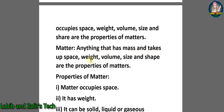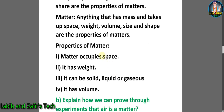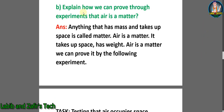Matter is anything that has mass and takes up space. The properties of matter are: number one, matter occupies space; number two, it has weight; number three, it can be solid, liquid, or gaseous; number four, it has volume. Question B: explain how you can prove through experiments that air is matter.